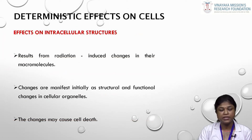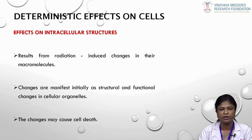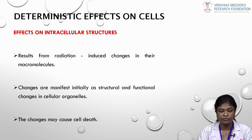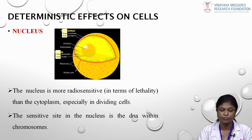Deterministic effects on cells progress from the intracellular structure level. When intracellular structures are affected, it affects macromolecules, which can cause structural or functional changes in cellular organisms and can even lead to cell death. Within the cell, the nucleus is more radiosensitive in terms of lethality than the cytoplasm — especially in dividing cells. Inside the nucleus, it is the DNA within the chromosome that is most radiosensitive and most affected.